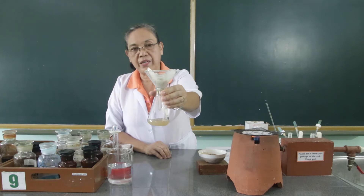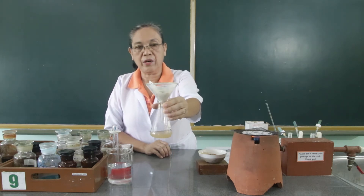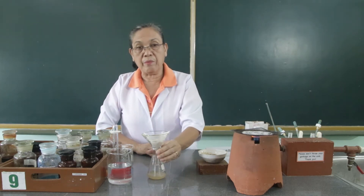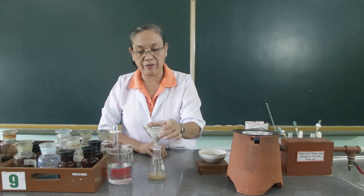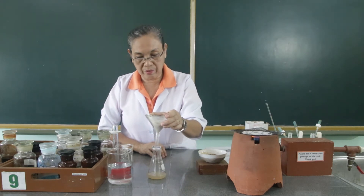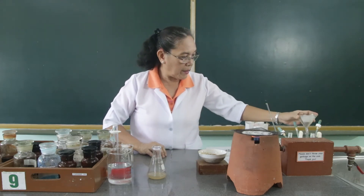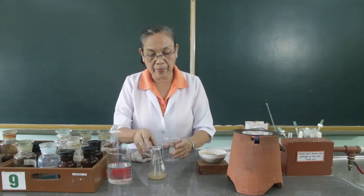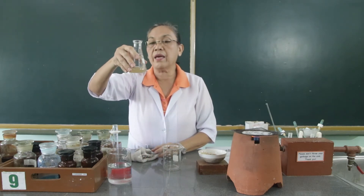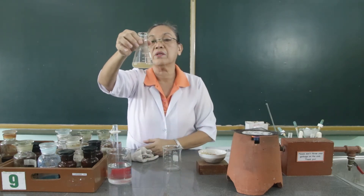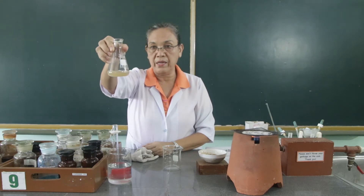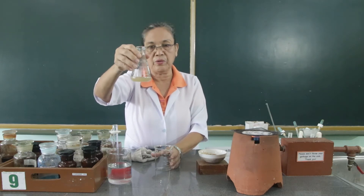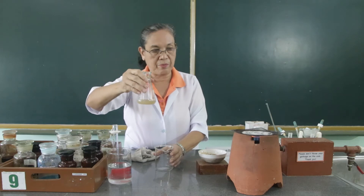We have already collected the filtrate from the boiled meat of the seashells. The next step is we are going to boil this again to concentrate it to half its volume. We will transfer it to this beaker. Since this is about 25 ml, we are going to concentrate it to about 12 ml after boiling.